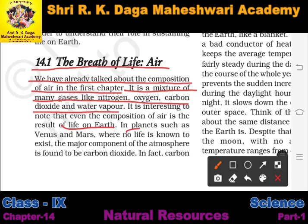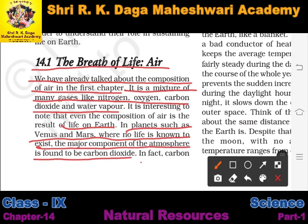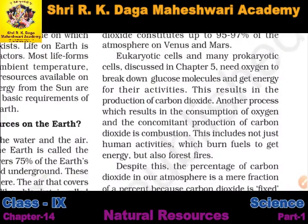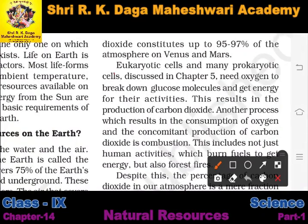In planets such as Venus and Mars, where no life is known to exist, the major component of the atmosphere is carbon dioxide. In fact, carbon dioxide constitutes up to 95–97% of the atmosphere on Venus and Mars, which is a major reason why life is not possible there.